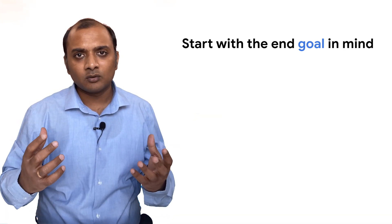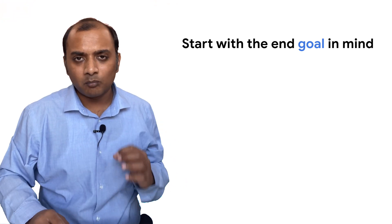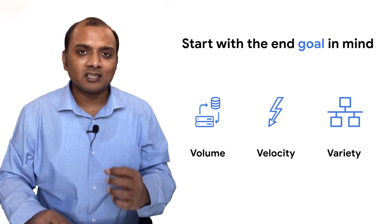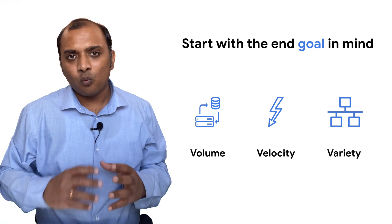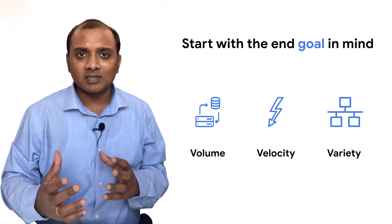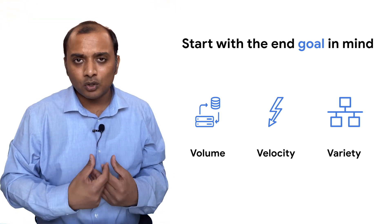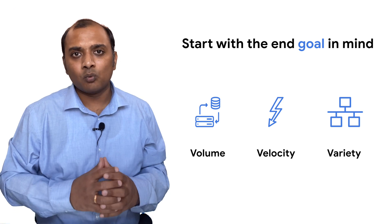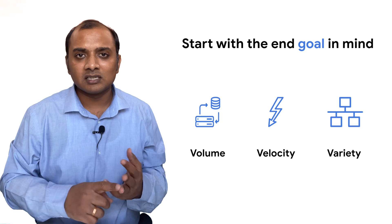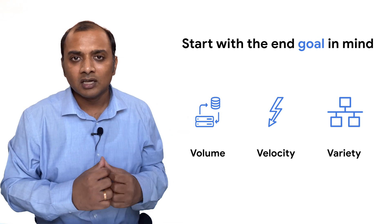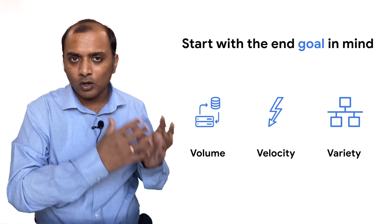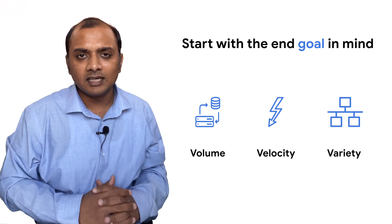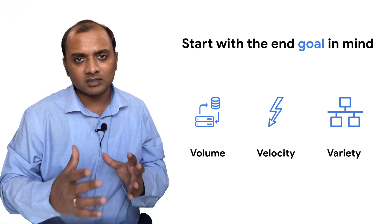So how do we design our data ingestion? Let's start with the end goal in mind. There are three things most critical to designing ingestion: volume, velocity, and variety. The volume of the data will determine what kind of ingestion mechanisms you need to choose. Velocity refers to how soon that volume is being produced — if you're producing more data in a day than you can ingest based on your bandwidth, how do you deal with that? And variety covers what kind of data is being produced — events, files, databases, or APIs — and based on all three you decide your ingestion mechanism.